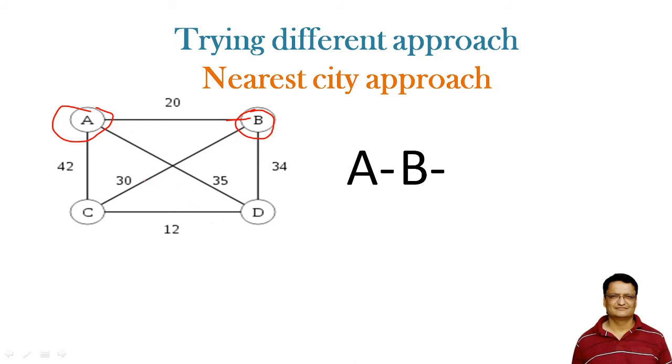Out of C and D, C looks to be the most nearest city to me, so I will go to C. From C, I will go to D because I don't have much option now, and I will come back to A.